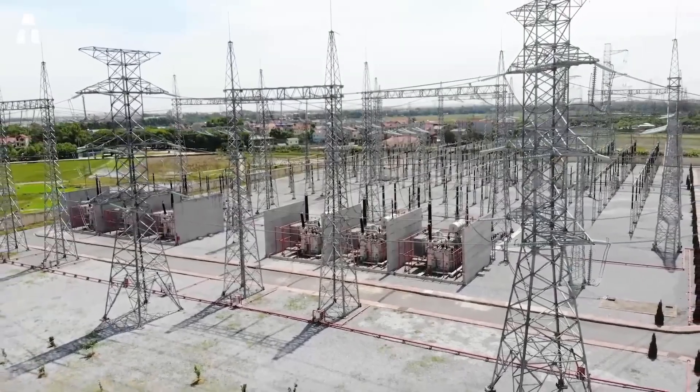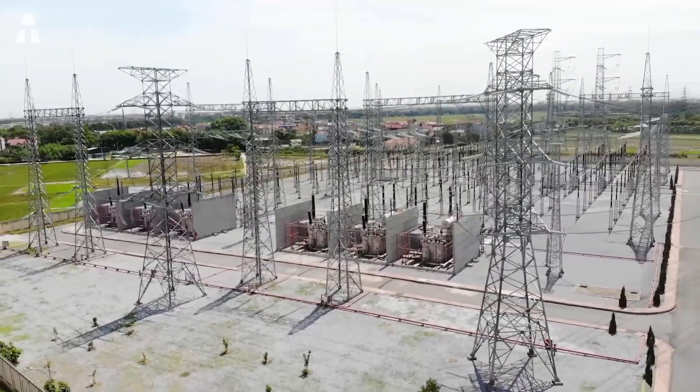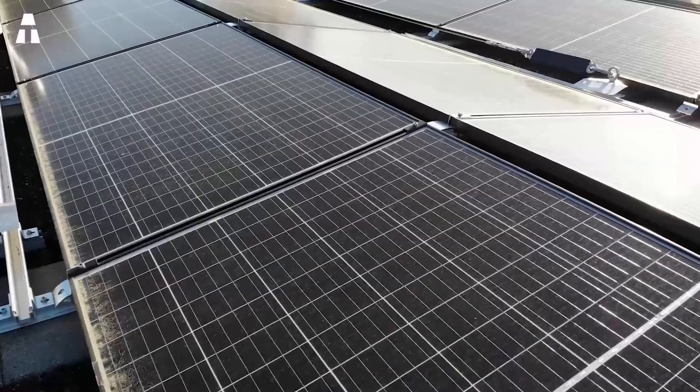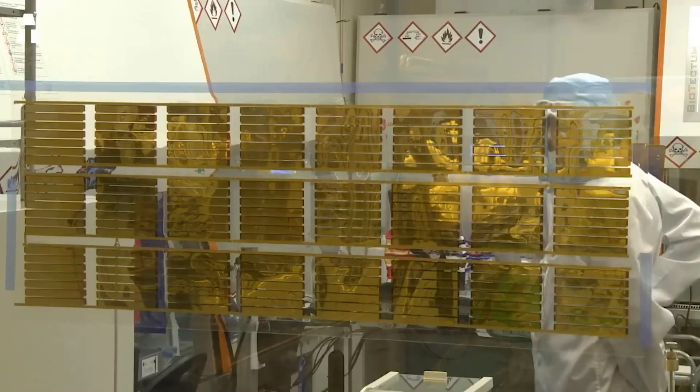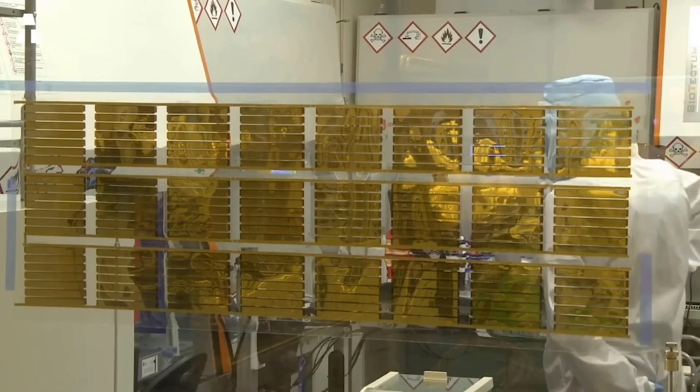Although abundant, silicon has drawbacks related to efficiency, manufacturing complexity, and pollution. However, scientists have revealed that a new type of solar cell would revolutionize the industry, known as perovskite.